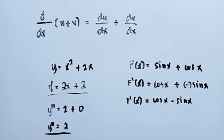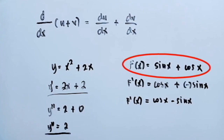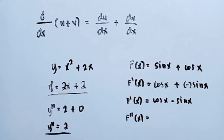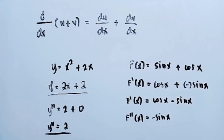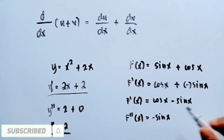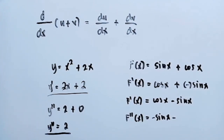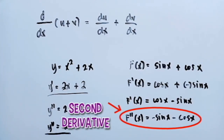And if we're going to get the second derivative of the function f(x) equal to sine x plus cosine x — f double prime of x is equal to: what is the derivative of cosine x? Negative sine x. And what is the derivative of sine x? Positive cosine x. So negative sine x minus the derivative of sine x, which is positive cosine x — so minus cosine x. So the second derivative of f(x) equal to sine x plus cosine x is negative sine x minus cosine x.